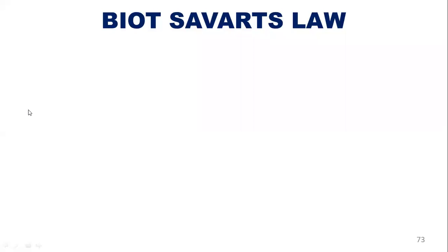So far we have seen what magnetostatics is, how it is different from electrostatics, and then line charge density, surface charge density, and volume charge density — including why the surface charge density is expressed in ampere per meter and not ampere per meter squared. Now we study something very familiar: the Biot-Savart law, which you might have studied in 12th grade physics.